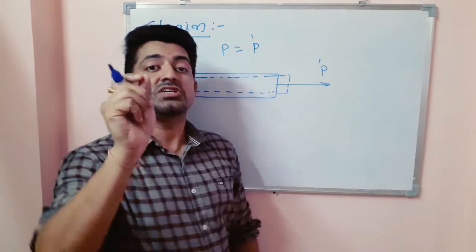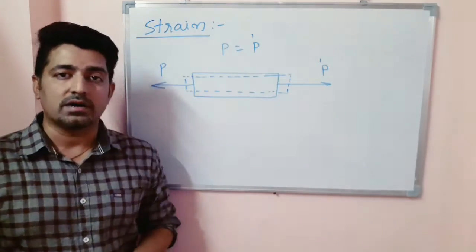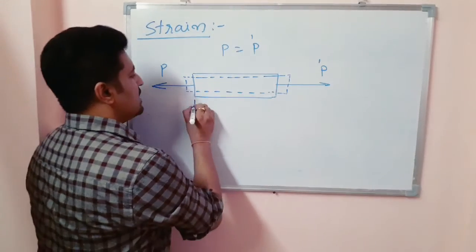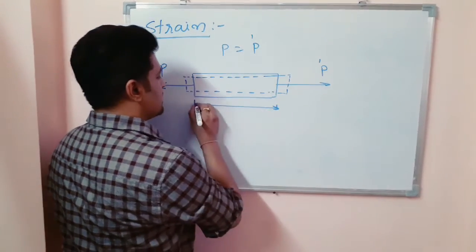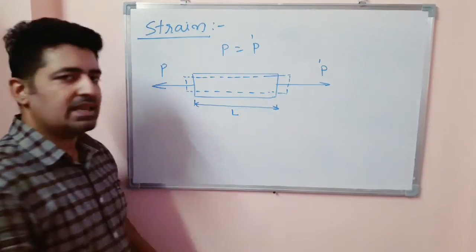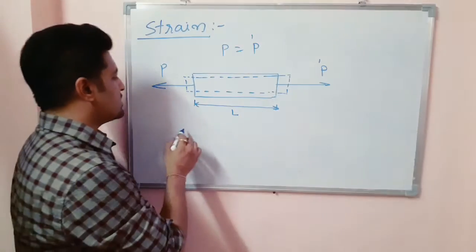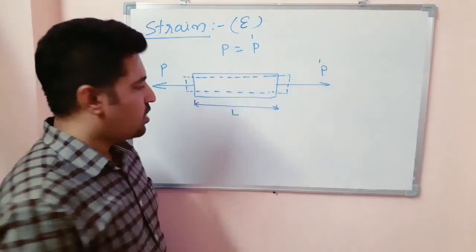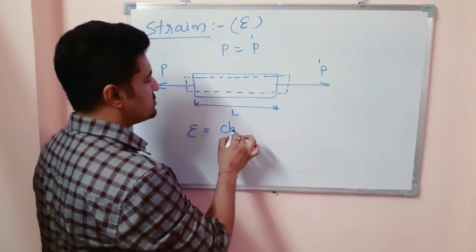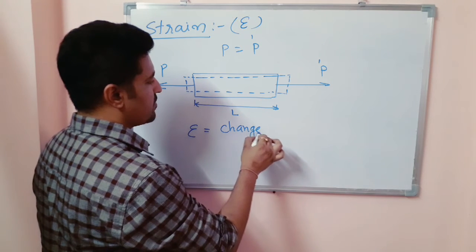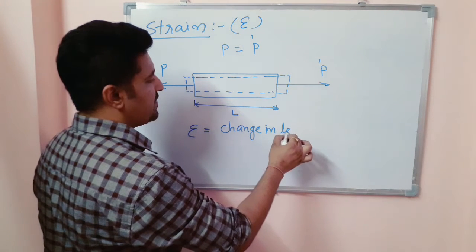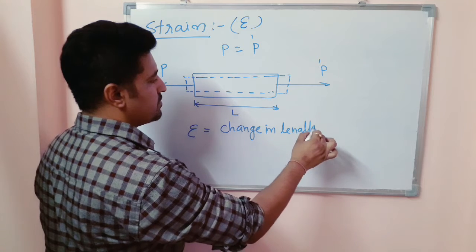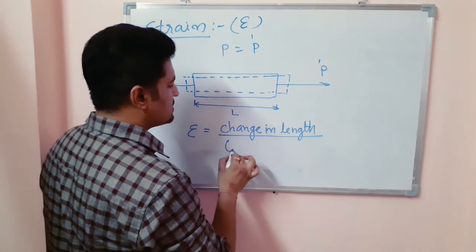There will be a change in length. Length changes and this is the original length of the body or element L. So what is strain? Strain is denoted by epsilon and this is a change in length upon original length.